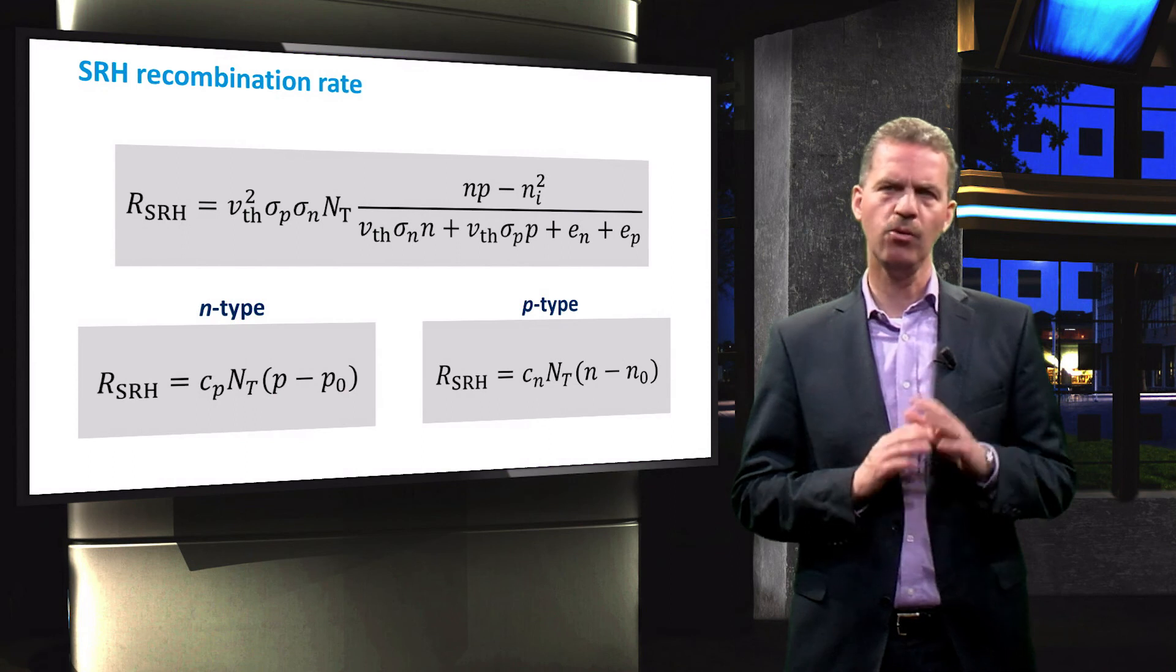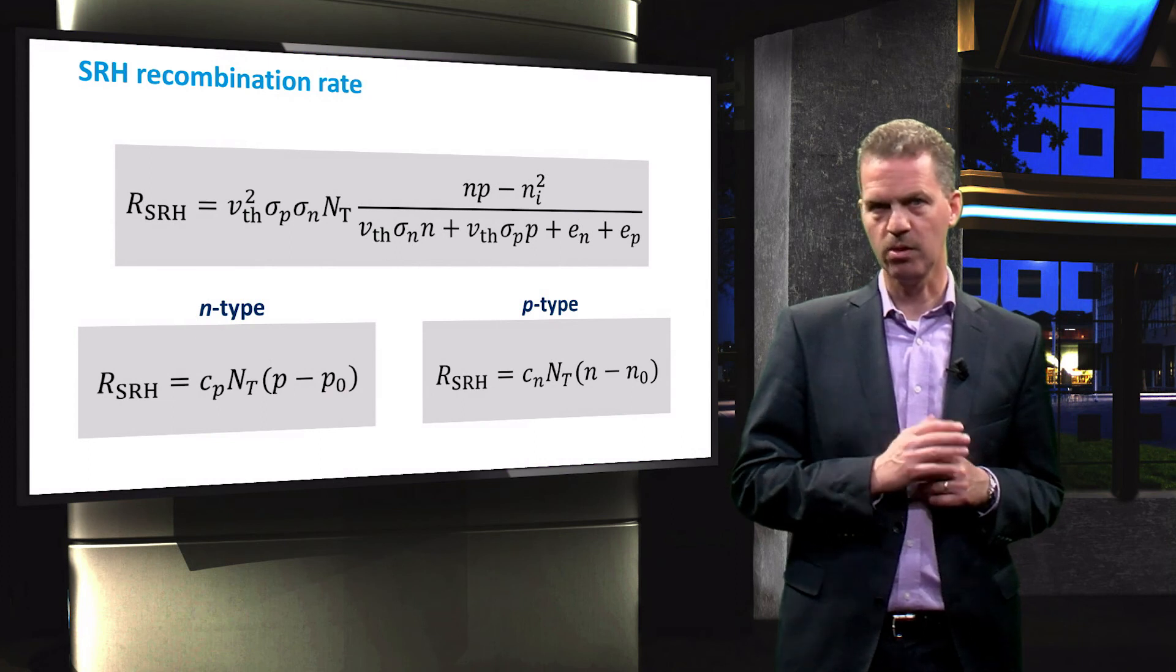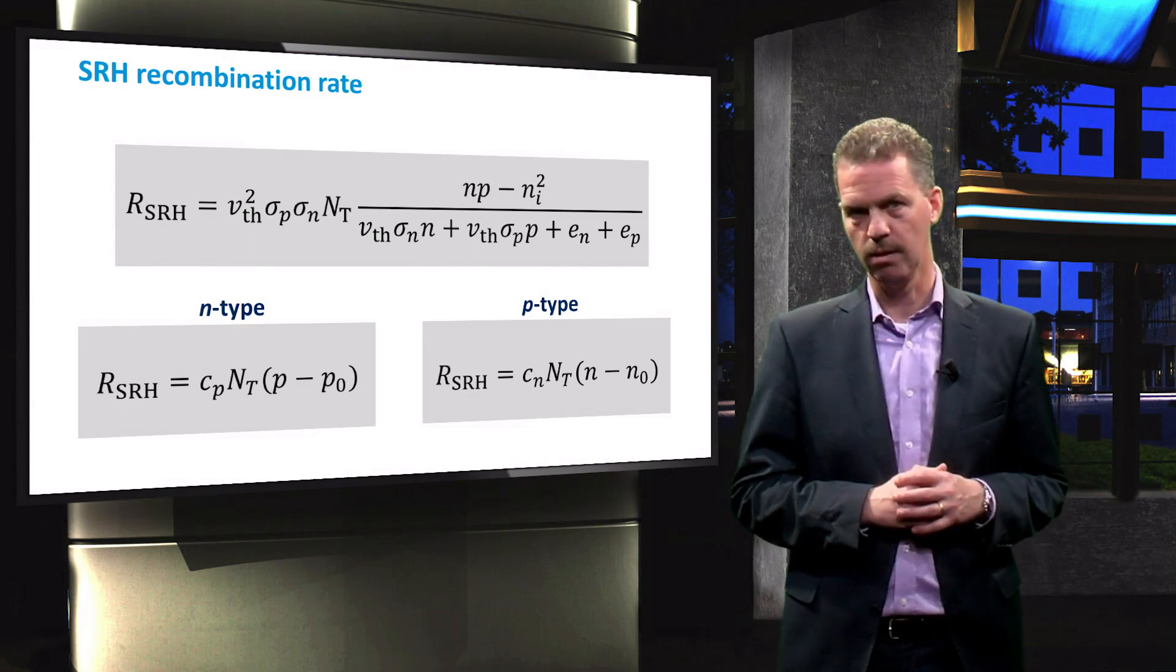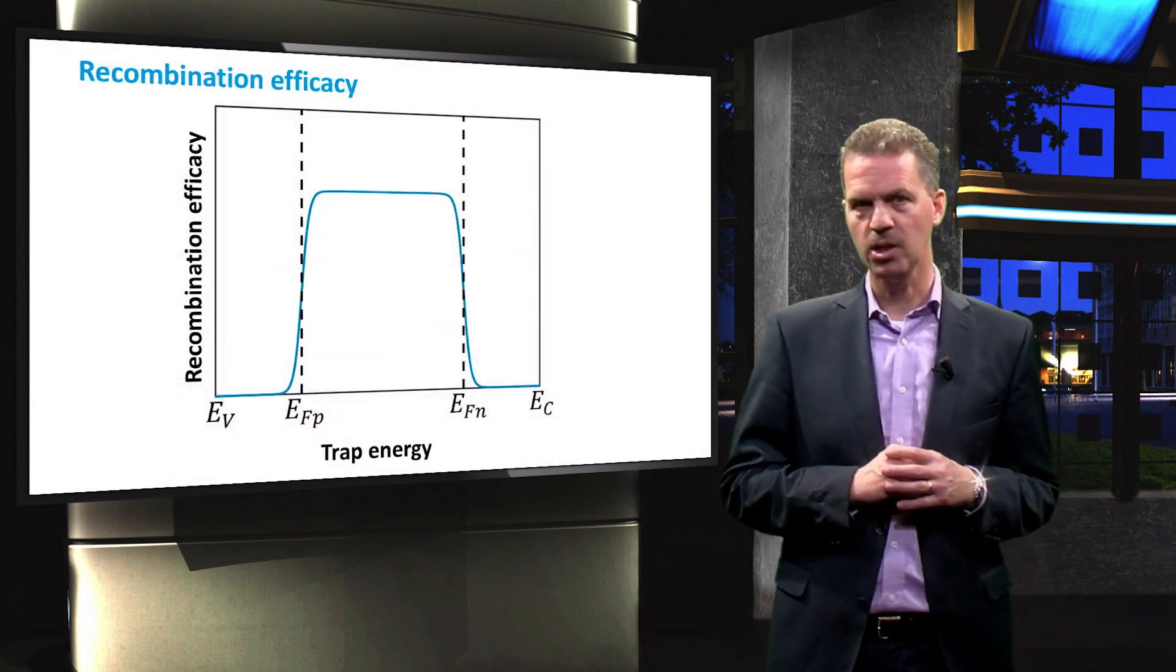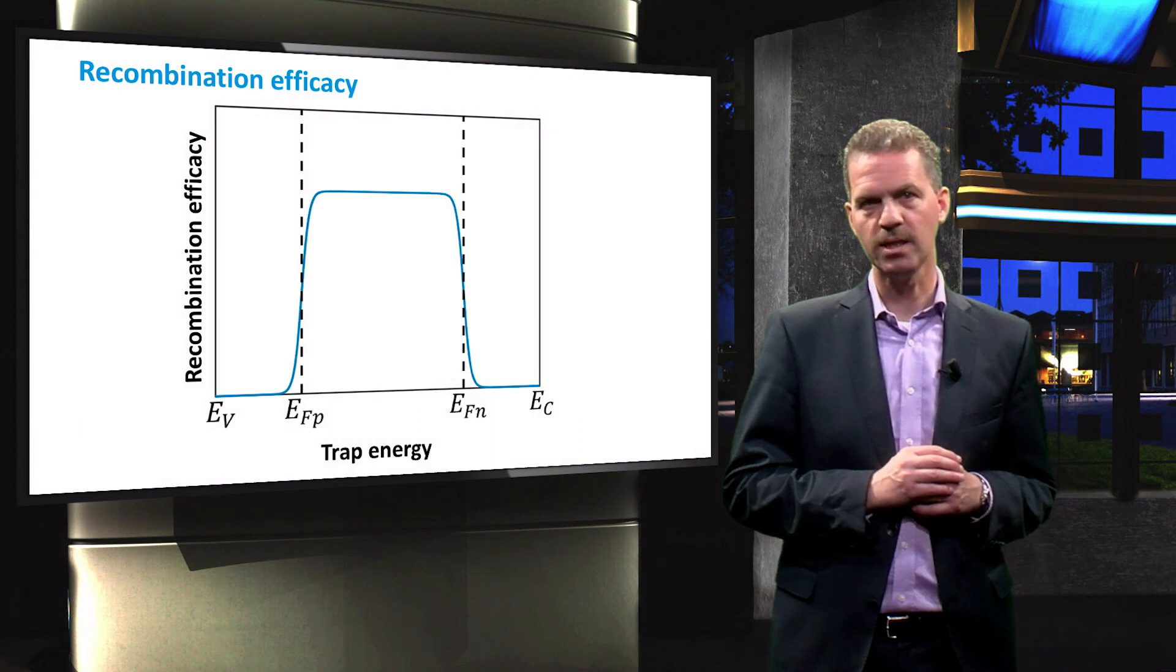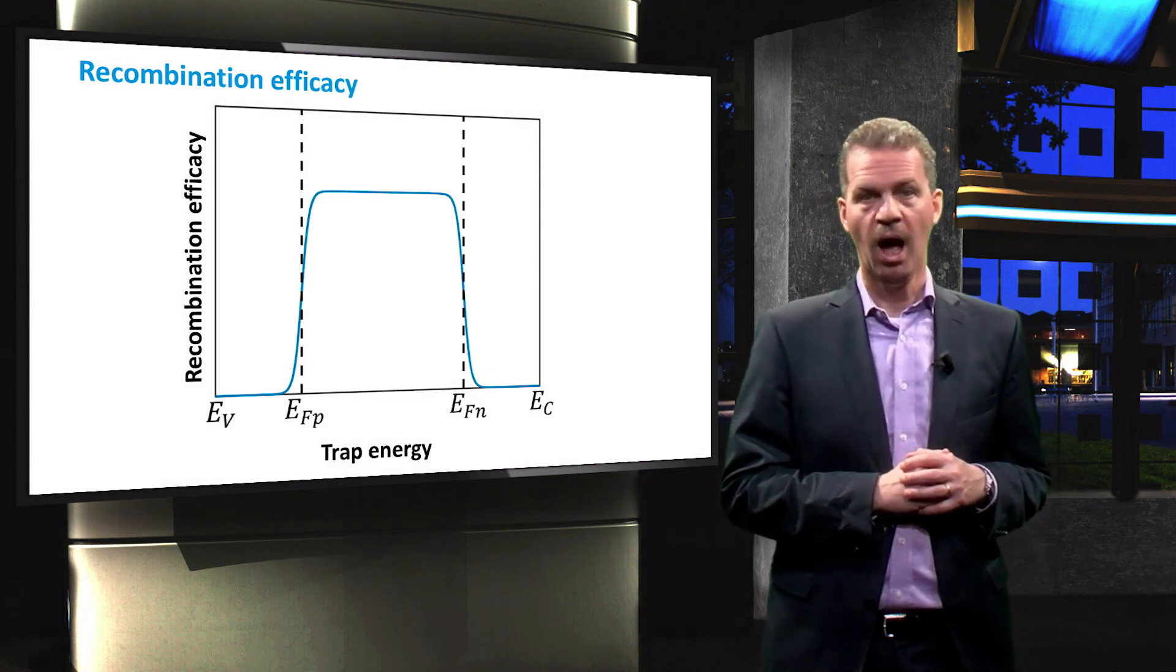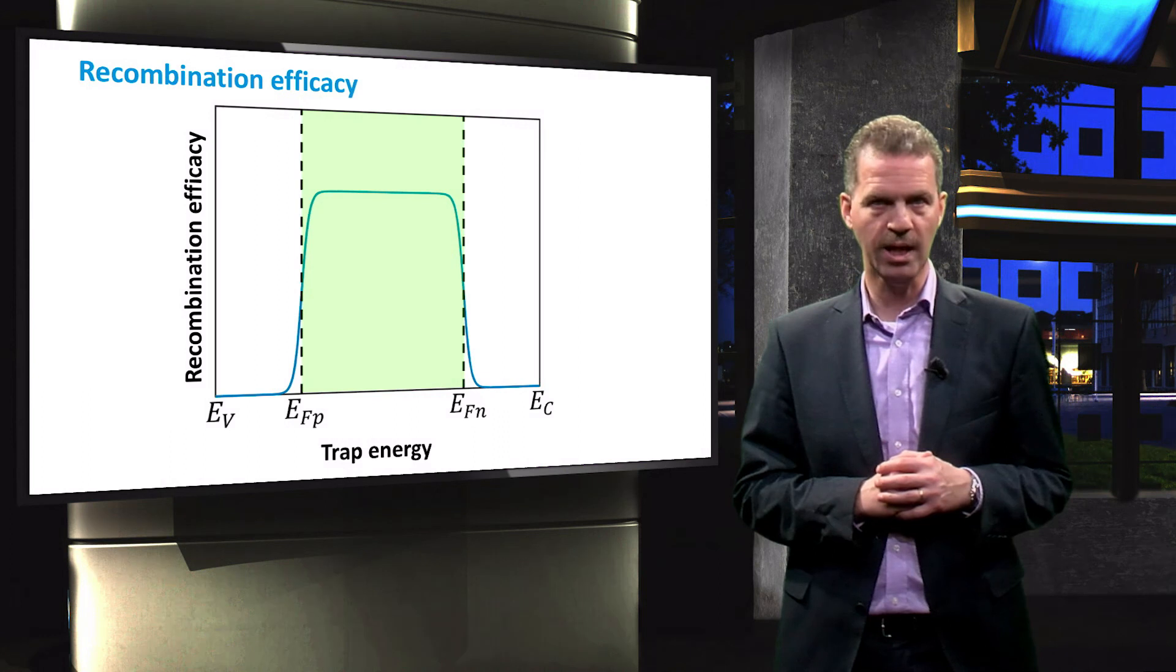It is important to realize that not all traps contribute to SRH recombination. Taking into account the occupancy of the traps expressed by the distribution function f, we can work out the recombination rate per trap, the so-called recombination efficacy. When we plot this recombination efficacy as a function of the trap energy, we see a clear dependence on the energy of the trap state, and that the efficacy reaches its maximum if the energy of the trap state is positioned in between the quasi-Fermi levels of the semiconductor. This indicates that trap energy between the quasi-Fermi levels results in high recombination rates, while trap energies outside the quasi-Fermi levels show low or even zero recombination rates.